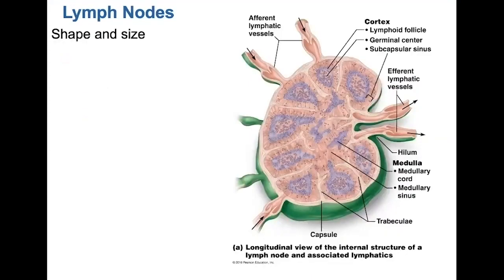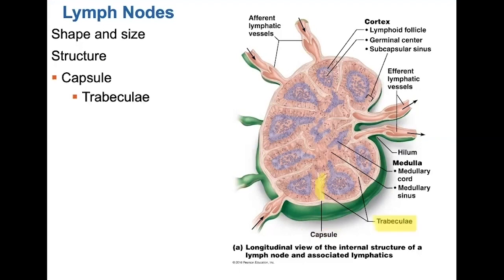Most lymph nodes are going to be less than one inch in size and will be shaped like beans. Lymph nodes are surrounded by a fibrous connective tissue capsule, illustrated in green. The capsule invaginates, or moves inward, in certain areas to form trabeculae. These trabeculae separate the lymph node into compartments.